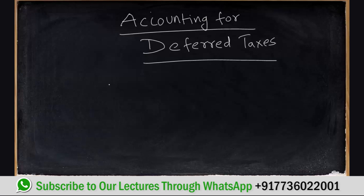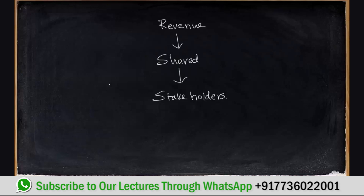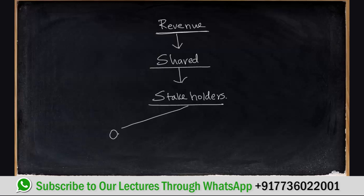Before that, let's have a basic introduction. We know that when any business entity generates revenue, that revenue would be shared among its stakeholders. So who is a stakeholder? A stakeholder can be the owner of the company — the share he takes is the profit available to him in the form of dividend.